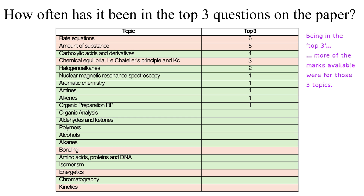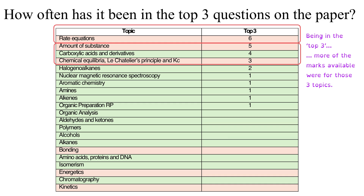Every year on a paper some topics are worth more than others. I've looked at what the big three topics are on each paper per year and which topics are consistently worth a high number of marks. Rate equations comes out on top — six times it's been one of the biggest three topics on a paper. Amount of Substance follows closely behind, as does carboxylic acids and derivatives, and then KC. These are the heavy hitters, being worth the most marks for a particular year.